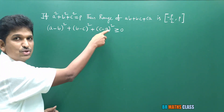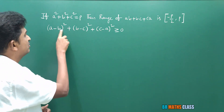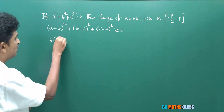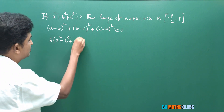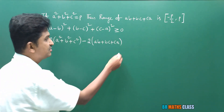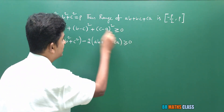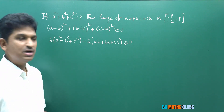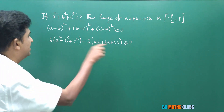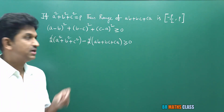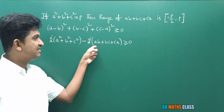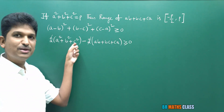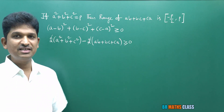Expanding further: C² + A² − 2AC. A² appears twice, B² appears twice, C² appears twice. So expanding everything gives 2(A² + B² + C²) − 2(AB + BC + CA) ≥ 0. Dividing this inequality by 2 — since 2 is a positive real number, the inequality sign remains the same — we get: A² + B² + C² − AB − BC − CA ≥ 0 for any three real numbers A, B, C.